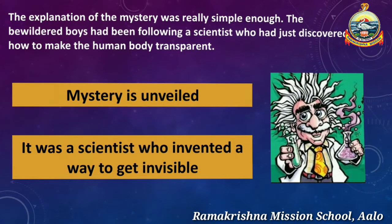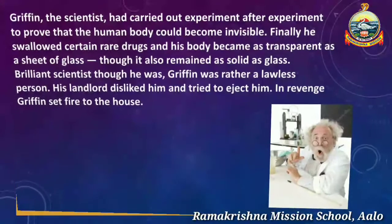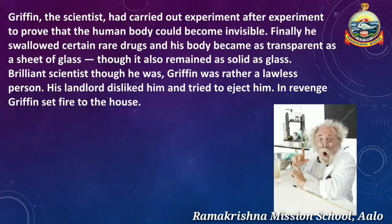We are talking about a scientist called Griffin. His name has been derived from a mythical monstrous hybrid bird. In H.G. Wells's The Invisible Man, Griffin is the megalomaniac scientist and a villainous character portrayed by the author. Griffin was a great scientist who carried out experiment after experiment to prove that the human body could become invisible. Finally, he swallowed certain rare drugs and his body became as transparent as a sheet of glass, though it also remained solid as glass.